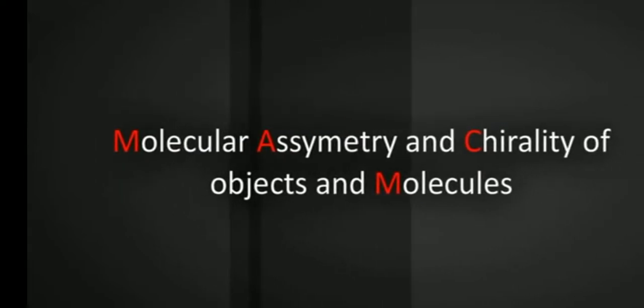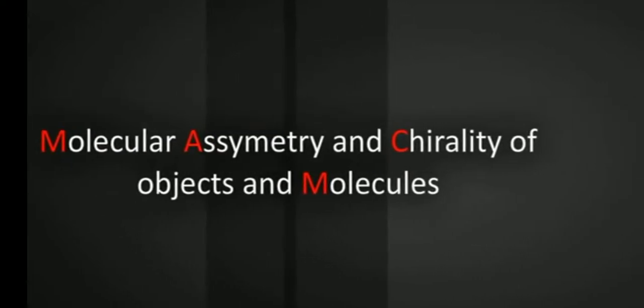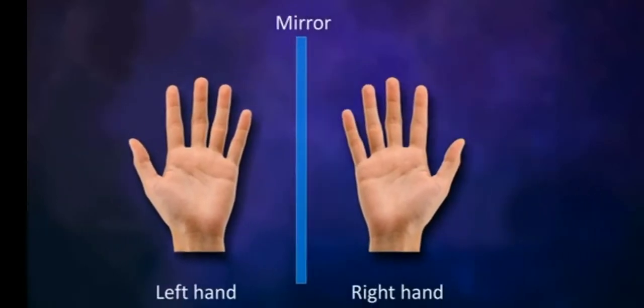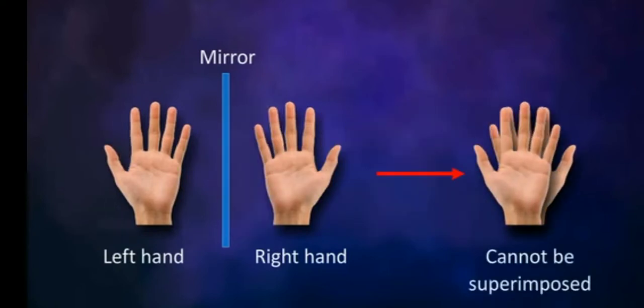Symmetry and chirality of objects and molecules: all objects or molecules have mirror images. An object or a molecule which is not superimposable on its mirror image is called chiral.